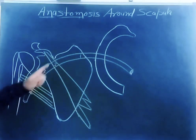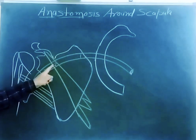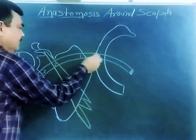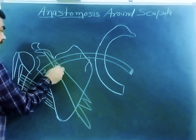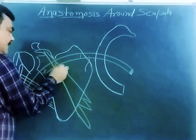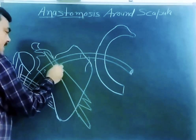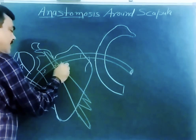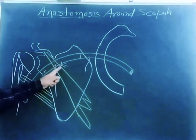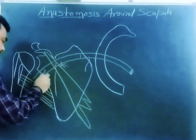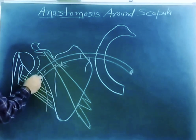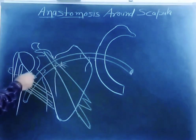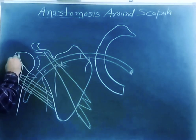The first part gives one branch, the second part gives two branches, and the third part gives three branches. The first part gives the superior thoracic artery. The second part gives two branches: the acromiothoracic artery and the lateral thoracic artery — acromiothoracic gives four branches. The third part gives the subscapular artery, the anterior circumflex humeral artery, and the posterior circumflex humeral artery.